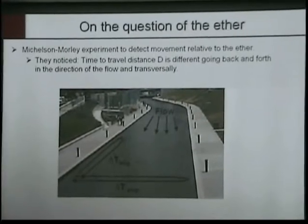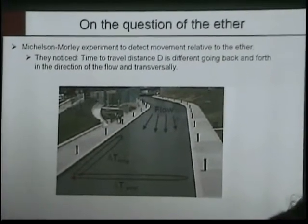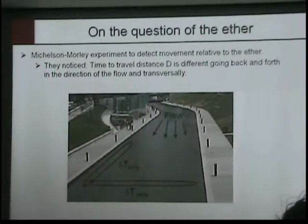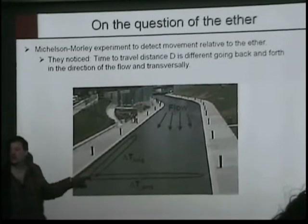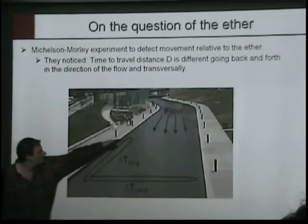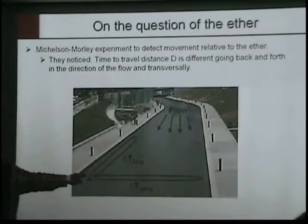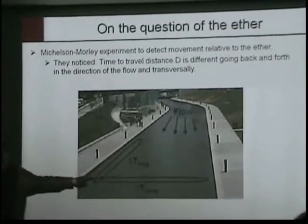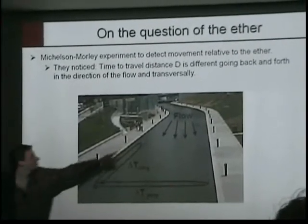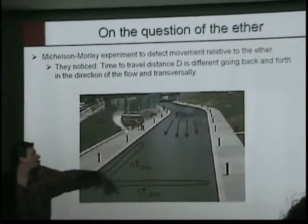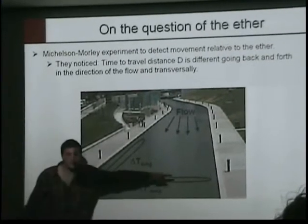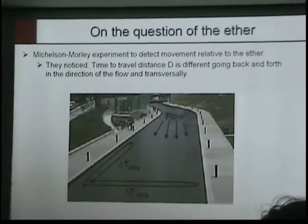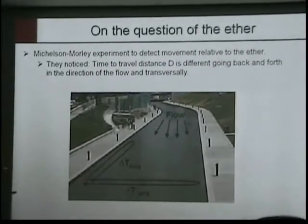Let me give you an example of how they actually determined there was no ether. Imagine you have a canal with some flow. If you swim back and forth 20 meters along the flow, the time it takes is slightly different than the time it takes to swim transversally 20 meters. The difference in time is related to the flow. With no flow, it's exactly the same in either direction. But if there is a flow, there's a time difference, and you can measure the flow velocity from that time difference.